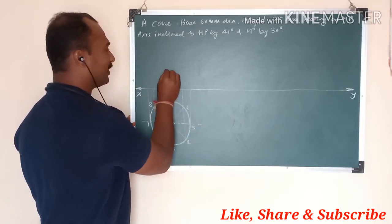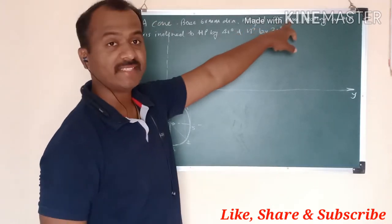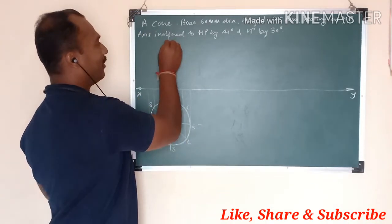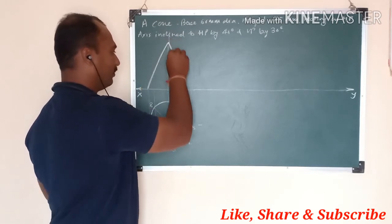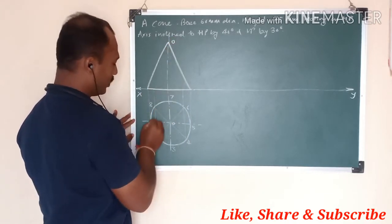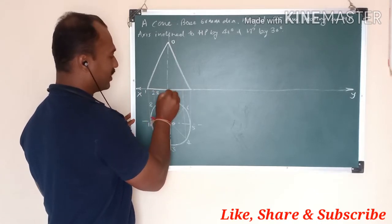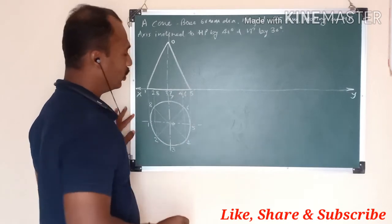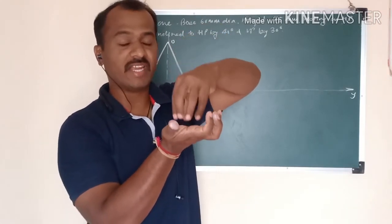Transfer the axis and plot the height of 75mm on the axis from base to apex, drawing it in thick. In the front view: this point is O (apex), then 1, then 2 and 8, then 3 and 7, then 4 and 6, and this is 5. This completes the first step where the solid is resting or standing on HP.